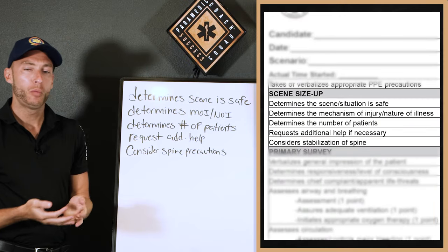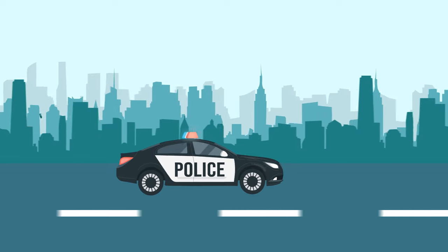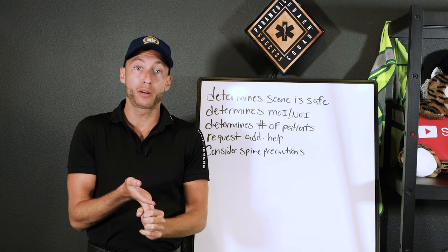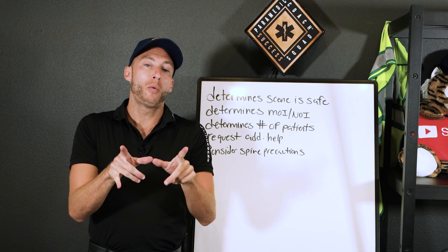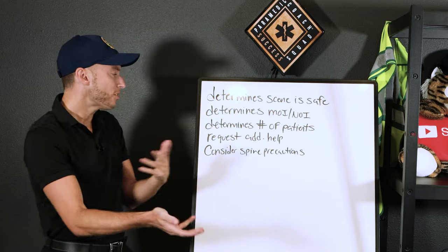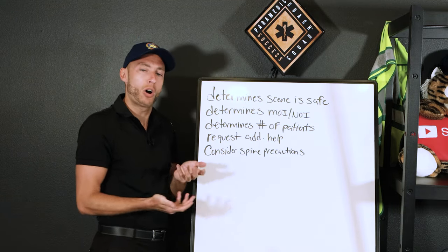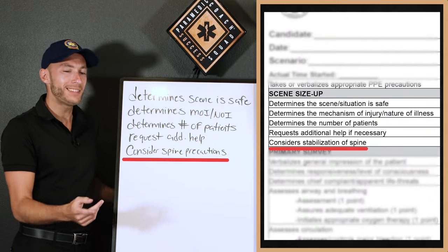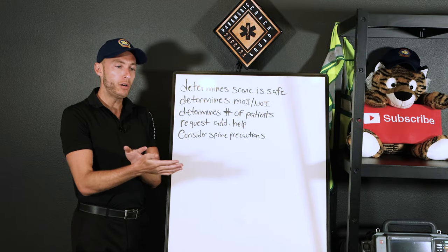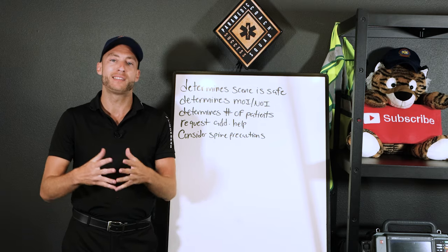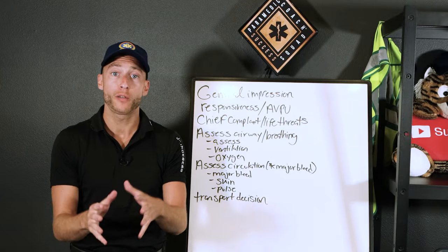Requesting additional help: this could be police for a violent patient, fire department for rescue or extrication, other first responders for a lift assist with a bariatric patient, or calling for a paramedic for a higher level of care. The last thing is considering spinal precautions — this is a medical assessment so it should be medical, but verbalize: I'm considering spinal precautions if the need arises.